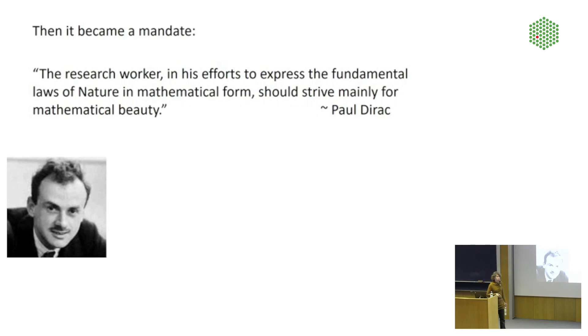Paul Dirac took it one step further. Paul Dirac won a Nobel Prize for the Dirac equation that explains the behavior of the electron. For Paul Dirac, beauty really was a mandate for the theoretical physicist. He wrote, the research worker in his efforts to express the fundamental laws of nature in mathematical form should strive mainly for mathematical beauty.